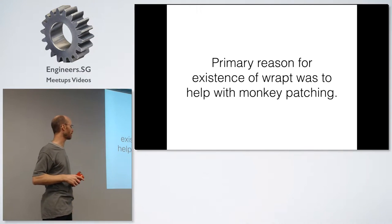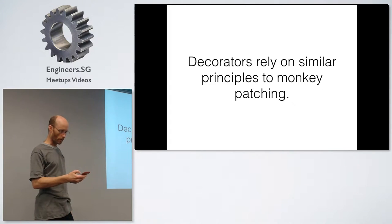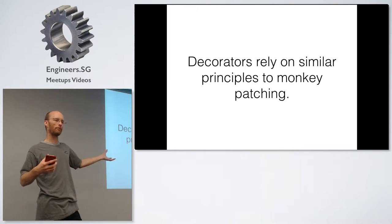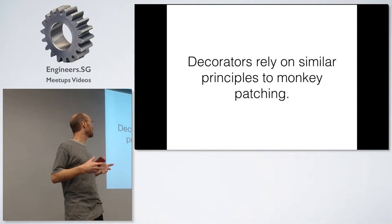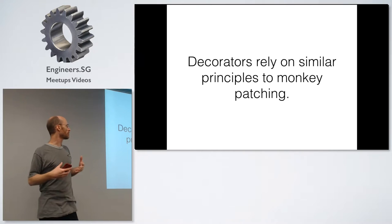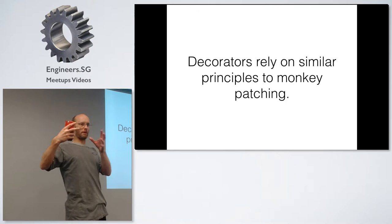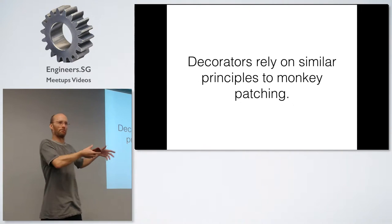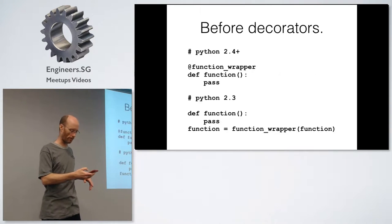I'd done all that monkey patch coding for New Relic. Then one holiday — I was actually up in KL — I thought, I've learned all this stuff about how to do monkey patching. It's time to sit down and do it properly. I did it as a separate library, which is what Wrapped is. That's where it all came from. So why does Wrapped have both decorators and monkey patching? Because decorators rely on a lot of the similar principles to monkey patching. I actually did the monkey patching support first, and the side effect was a great way of implementing decorators easily.